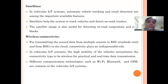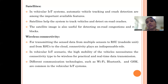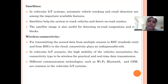Satellites can be used for tracking vehicles and detecting on-road crashes. Satellite imagery is useful for detecting on-road congestions and road blocks. Autonomous vehicle tracking and crash detection are the main features for which you can deploy satellites.